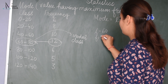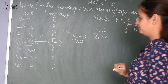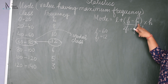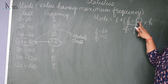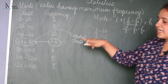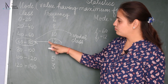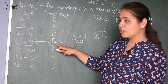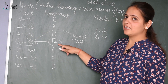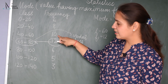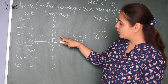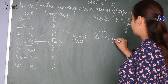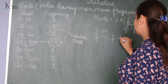Now F0 is the frequency of the class preceding the modal class. The modal class is 60 to 80, so the preceding class is 40 to 60. Going backward, that frequency is 10. So F0 = 10.